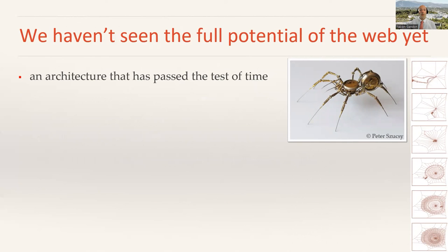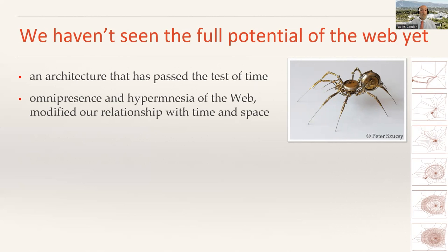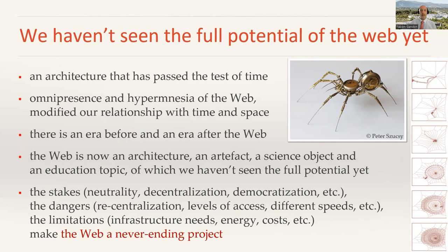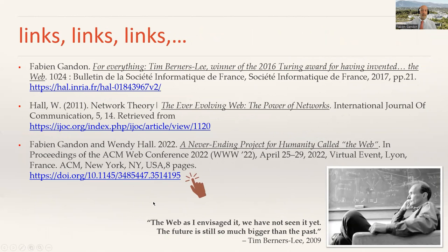We haven't seen the full potential of the web yet. It's clearly an architecture that has passed the test of time — it is omnipresent, it has hypermedia, and it has modified our relationship with time and space. There is an era before the web and an era after the web. The web is known as an architecture, an artifact, a science subject, and an education topic, and we haven't seen the full potential of all these facets. There are many stakes for the web: neutrality, decentralization, and democratization. There are dangers: recentralization, level of access, and different speeds. And there are limitations: infrastructure needs, energy, and cost. All these make the web a never-ending project. Thank you for your attention, and because we're talking about the web, we included a number of links to continue.